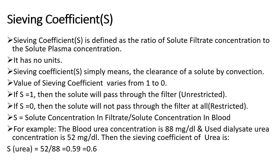Another important characteristic is the sieving coefficient, also known as S. Sieving coefficient is defined as the ratio of solute filtrate concentration to solute plasma concentration. You can calculate it by dividing the solute concentration in the dialysate by the solute concentration in the blood. That is your sieving coefficient — it has no units.